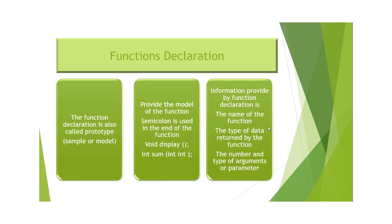اس کے بعد آتا ہے function declaration، جسے prototype بھی کہتے ہیں۔ یہ function کا ایک model ہے۔ Function declare کرنے کے بعد semicolon لگانا ضروری ہے۔ جیسے void display اور int sum(int, int) — جو parenthesis کے اندر ہو اسے arguments یا parameters کہتے ہیں۔ void display کچھ return نہیں کرتا، جبکہ int sum ایک integer return کرے گا اور اس کے اندر دو integer parameters ہیں۔